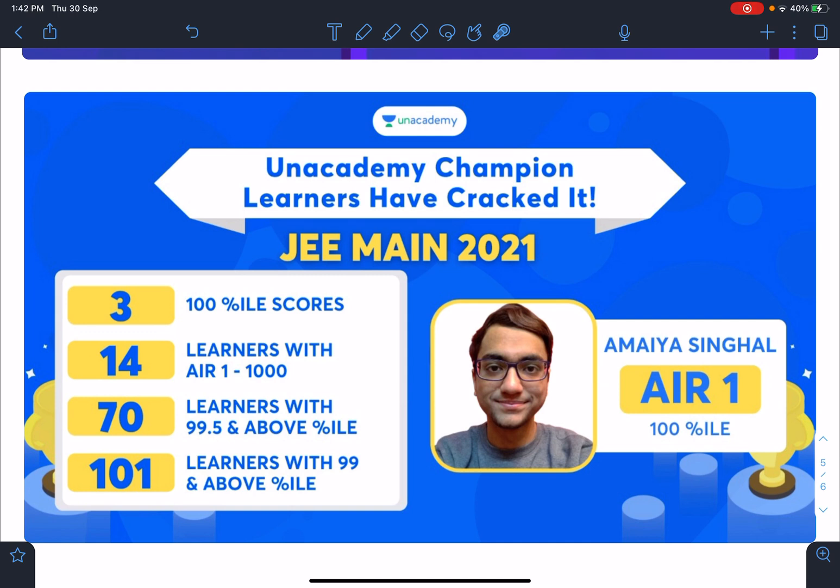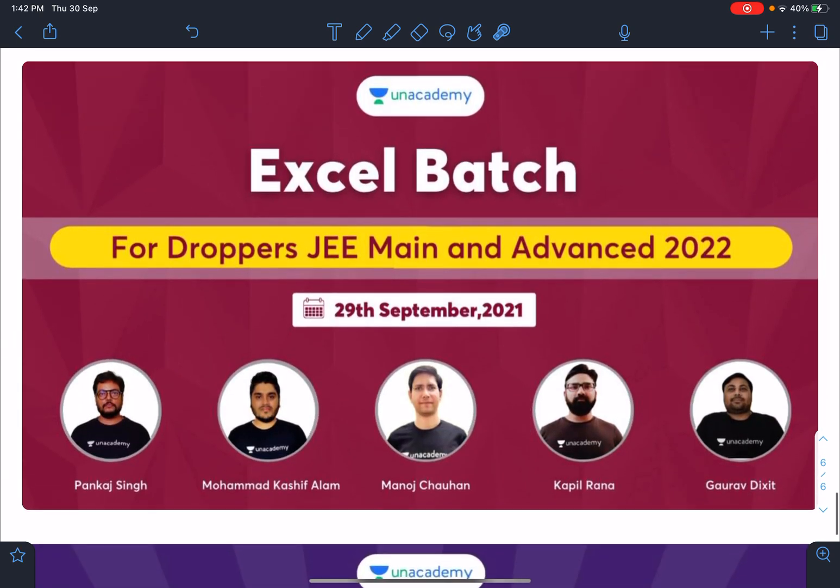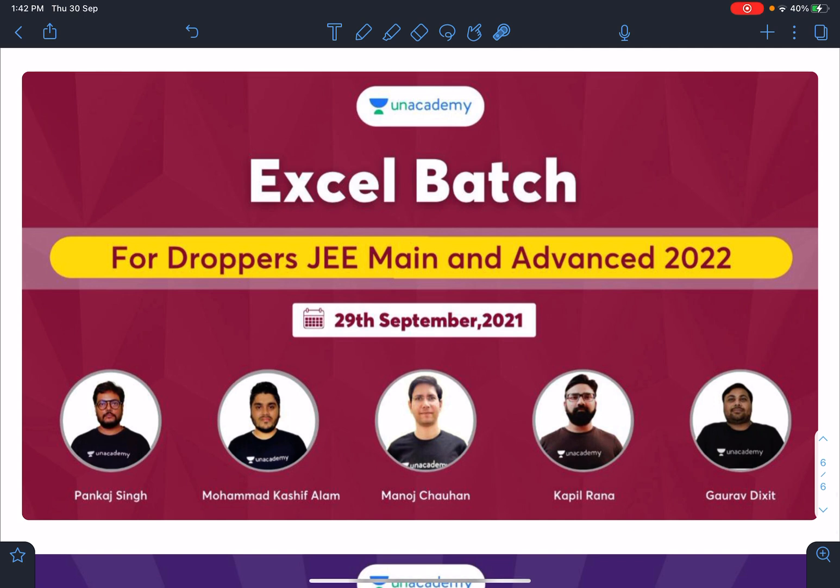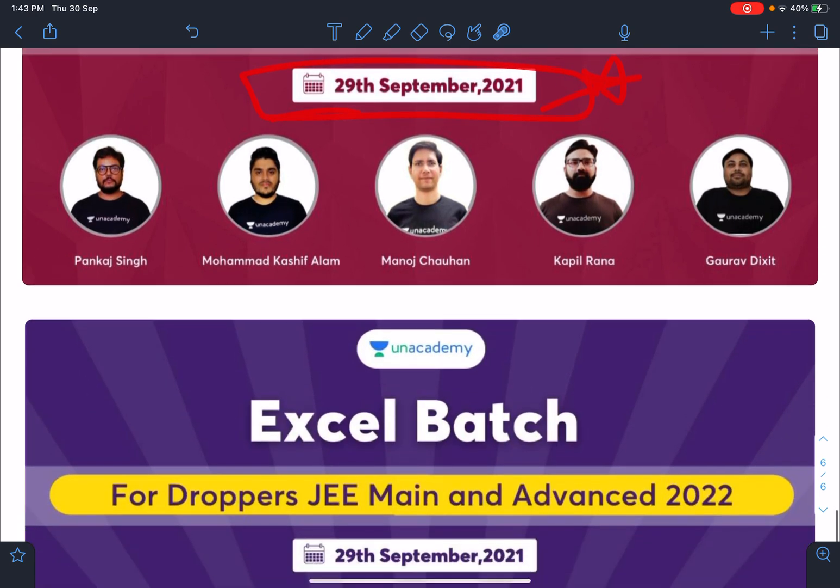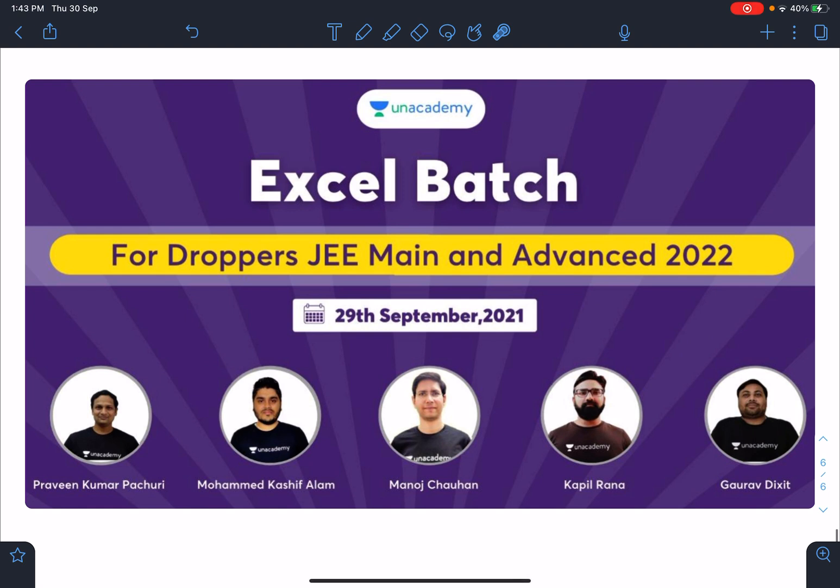An amazing girl has got AIR 1 in JEE Mains 2021. And a new batch is starting for droppers of JEE Mains and Advanced 2022, starting from 29th of September. There is another droppers batch, the Excel batch, also starting from 29th of September 2021. This is also for JEE Advanced, JEE Mains and Advanced 2022. These are the faculty members.